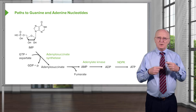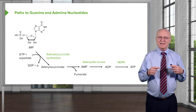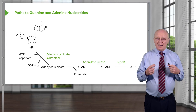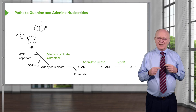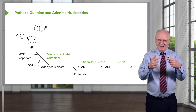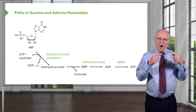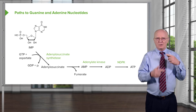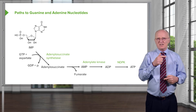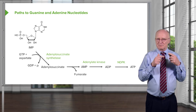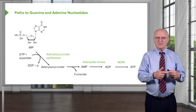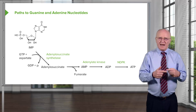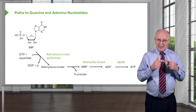NDPK turns out to be a very flexible and useful enzyme because it will catalyze the addition of a phosphate to all of the diphosphates — whether they're purines, pyrimidines, or deoxyribonucleotides, it doesn't matter. All of the diphosphates will get converted to triphosphates in a reaction catalyzed by NDPK.